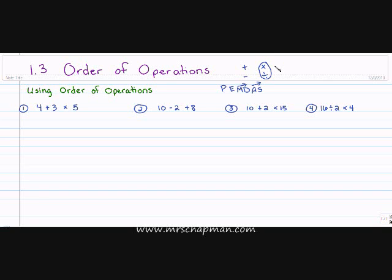In these first four examples we don't have any parentheses or exponents, so we're simply going to solve multiplication and division first, and then solve addition and subtraction moving left to right.